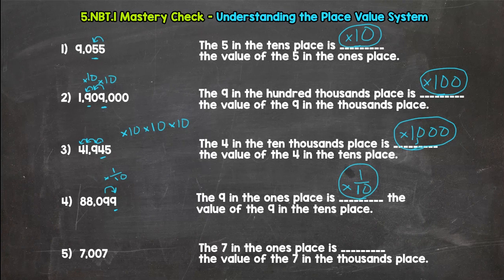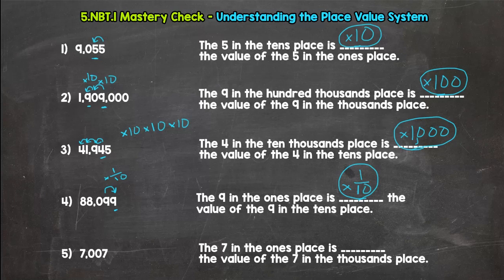So your answer for number four, let's read it back. The nine in the ones place is one tenth the value of the nine in the tens place. True.